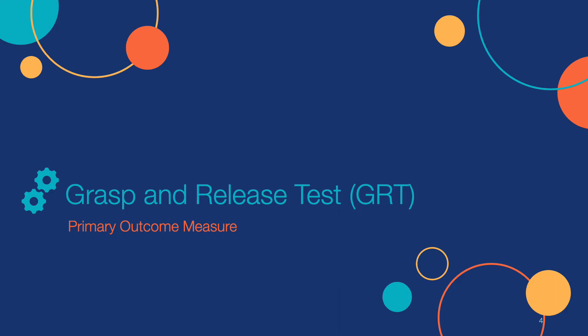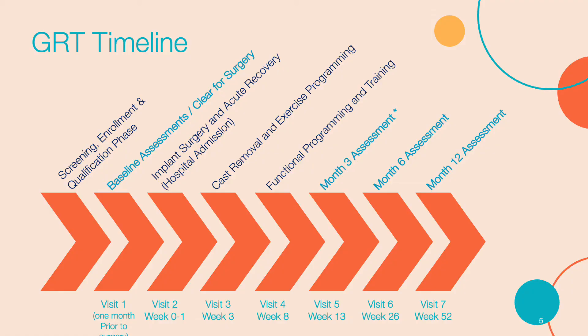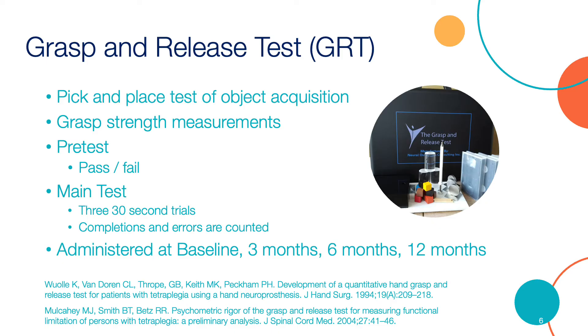First up, we will discuss our primary outcome measure, the GRT. The GRT will be administered within 1 month prior to NNP implantation and repeated at 3 months, 6 months, and 1 year post-implantation. The Grasp and Release Test, or GRT, is a pick-and-place test of object acquisition. There are six objects, ranging in size and weight.